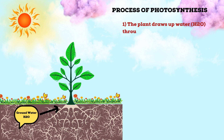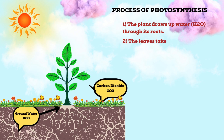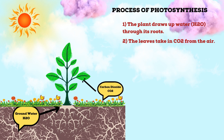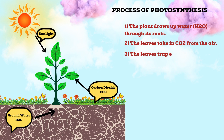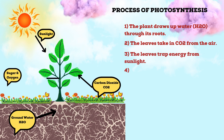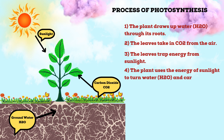The plant draws up water (H2O) through its roots. The leaves take in carbon dioxide (CO2) from the air. The leaves grab energy from sunlight. The plant uses the energy of sunlight to turn water (H2O) and CO2 into sugar and oxygen.